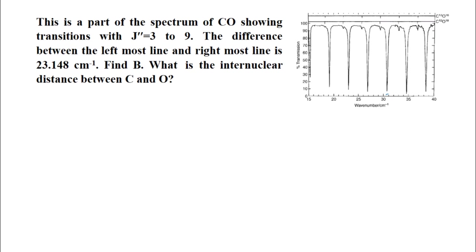Here is a real rotational spectrum of carbon monoxide. On the x-axis we are plotting wave number or centimeter inverse. On the y-axis we are plotting percentage transmission. At whichever wave number there is some absorption of light, the percentage transmission is not 100 — in other words, at these wave numbers the percentage transmission is less than 100. So all these different lines that we get are the wave numbers where light has been absorbed. This is the rotational spectrum.